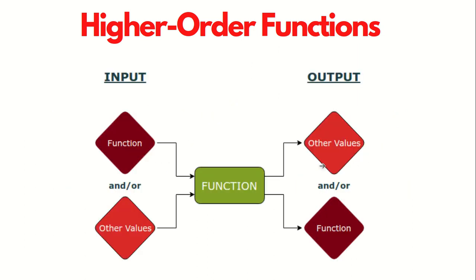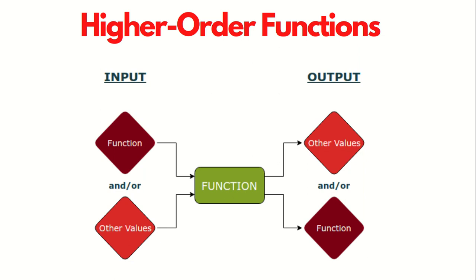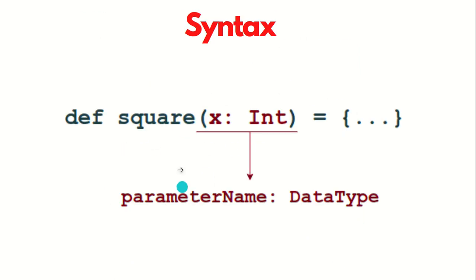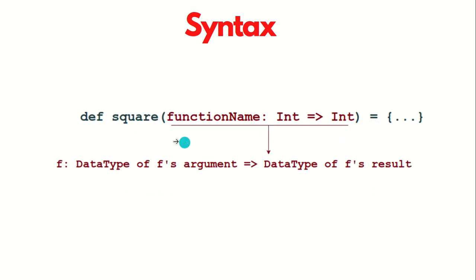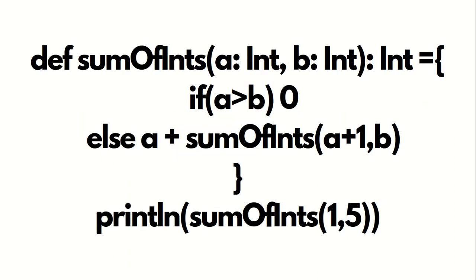Graphically, inputs — including functions or other values — can be sent into a higher order function, and it can return other values or a function as a result. This is the normal function syntax using the keyword 'def', a function name, a parameter with its data type, and a function body. For higher order functions, the parameter includes a function type specified as 'data type => data type' inside the parentheses.